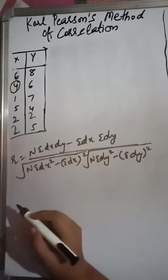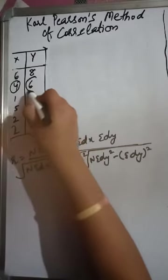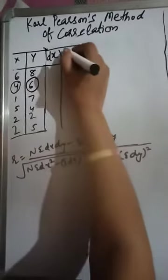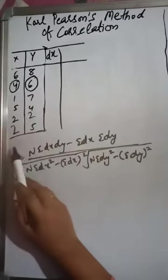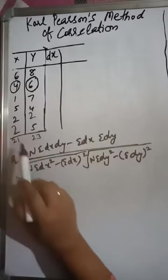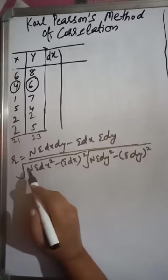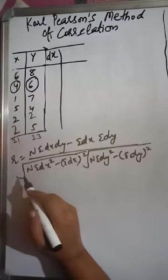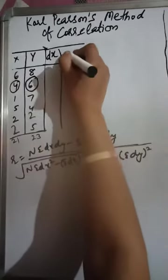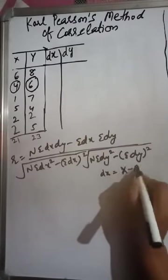Here, Σx = 21 and Σy = 23, with n = 6. Since 21/6 and 23/6 give fractional numbers, we use the assumed mean technique. We assume the mean for x as 4 and for y as 6. We then find deviations dx = x − 4 for the x series, and dy = y − 6 for the y series.